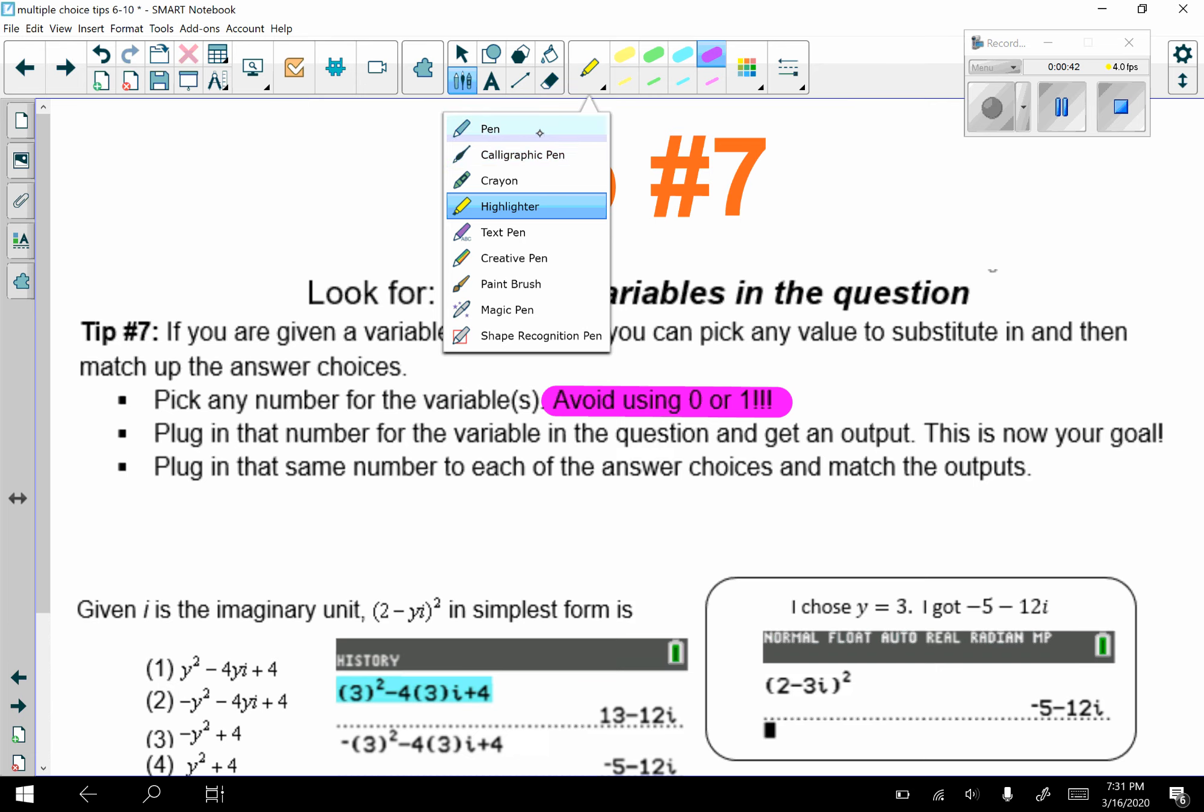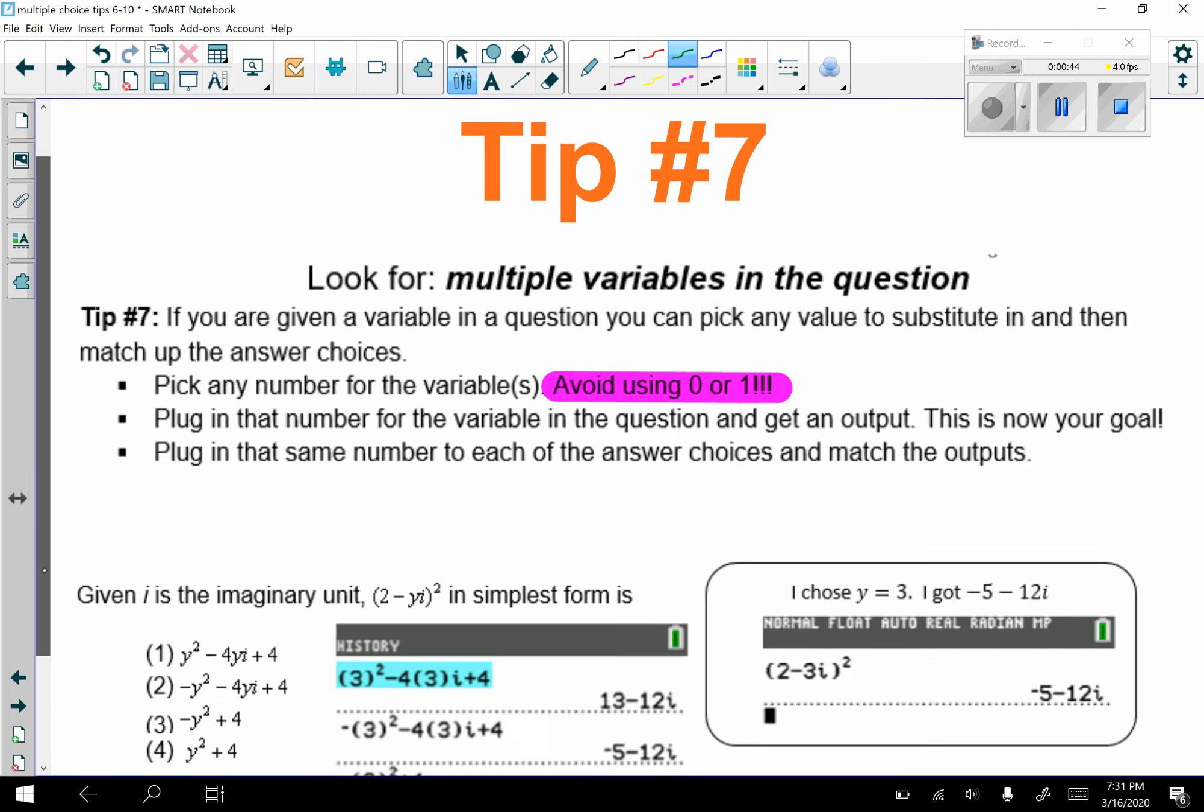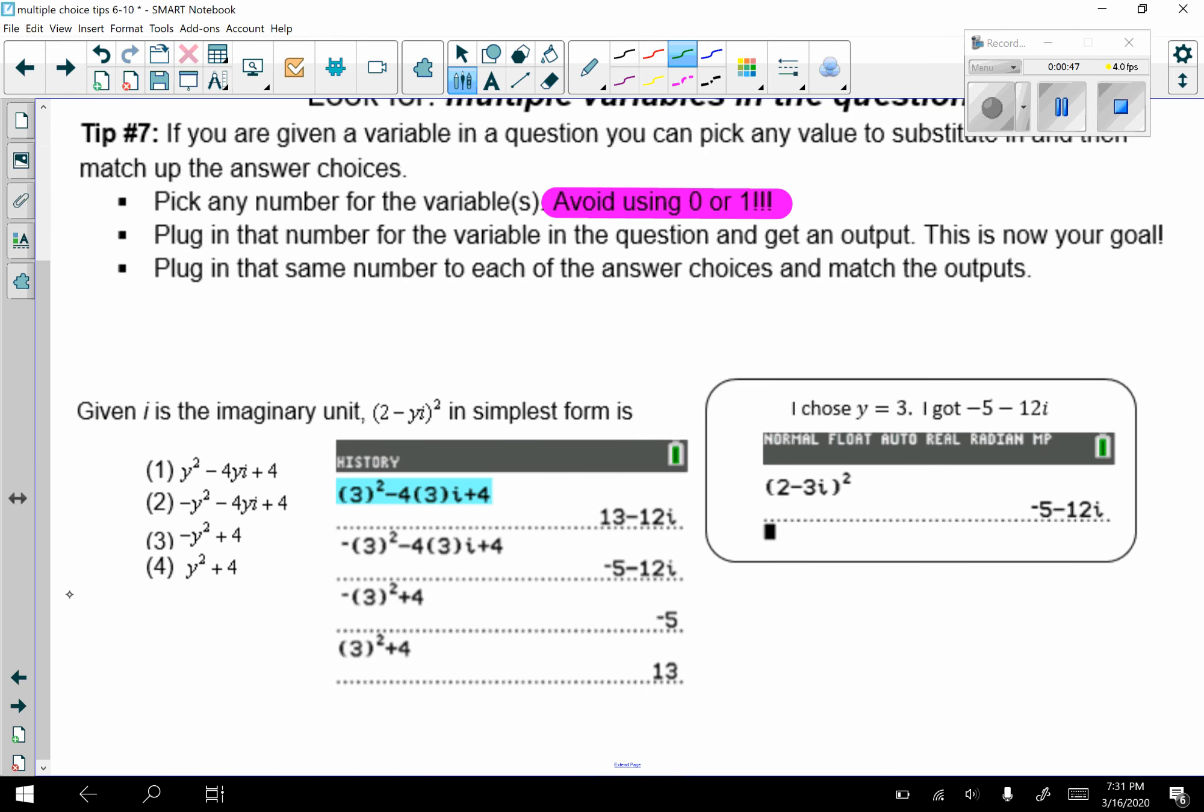Let's take a look at this question. Given i is the imaginary unit, (2 - yi)² in simplest form is? Remember that y is a variable, but i is an actual number. So I chose y = 3.